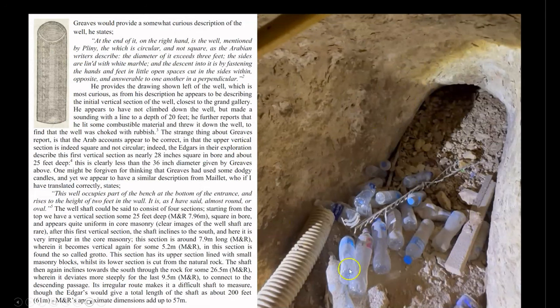Here on the right you can see what the lower opening of the well shaft looks like today. On the left, this excerpt from Keith Hamilton's Layman's Guide to the Great Pyramid states: "At the end of it, referring to the subterranean shaft, on the right hand is the well, mentioned by Pliny, which is circular and not square. The diameter of it exceeds three feet, and the sides are lined with white marble." I think that by white marble — which has never been found or used in any Egyptian construction — they were simply mistaking white calcite crystal, a stone used abundantly in Egypt. I will now put in a clip showing the moment I noticed this small piece of calcite crystal in the recess, along with that huge vein of iron oxide and the first piece of red granite.